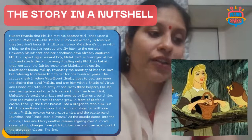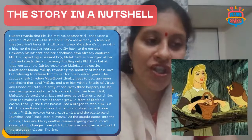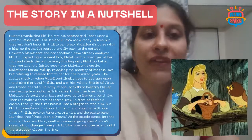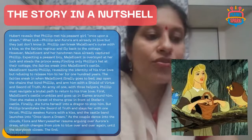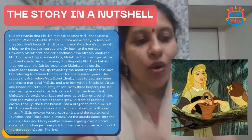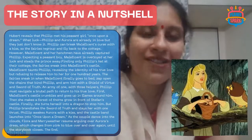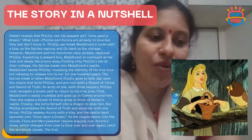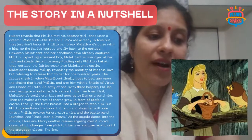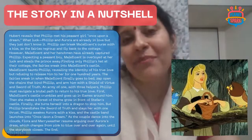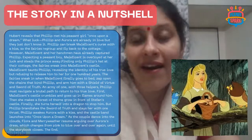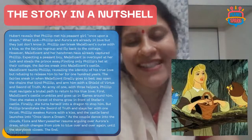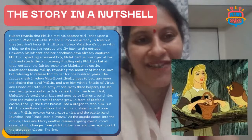The evil witch taunts Philip, revealing his true love's identity but refusing to release him for 100 years. The fairies sneak in when Maleficent goes to bed, zap open Philip's chains, and arm him with a shield of virtue and a sword of truth. An army of one with three helpers, Philip navigates a brutal path: Maleficent's castle crumbles and goes up in flames around him, she grows a forest of thorns in front of King Stephen's castle, and finally she turns herself into a dragon — but Philip brandishes the sword of truth and slays her with one thrust.